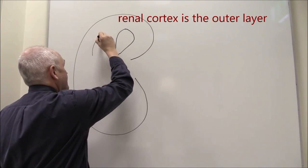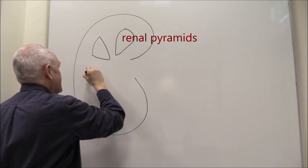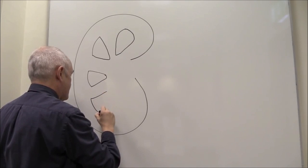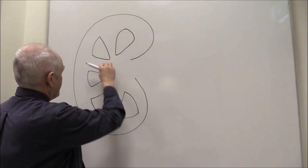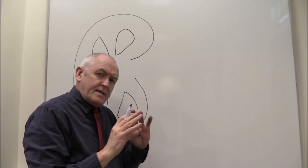So here we have some medullary pyramids. Pyramids shaped, pyramidal, triangular shaped structures. Three dimensionally they look like a pyramid. So we have the cortex on the outside, the medullary pyramids, and the cortical columns between the pyramids.